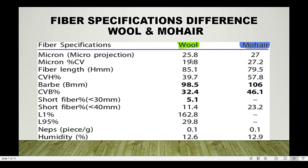Regarding fiber specifications by micron: wool micron is 25.8 while for mohair it is 27. The micron CV of wool is comparatively low while for mohair it is high. For short fiber percentage — below 30 mm and below 40 mm — in wool it is 5%, while in mohair it is negligible or nil. Short fibers are generally defined as fibers with length below 12 to 13 mm.